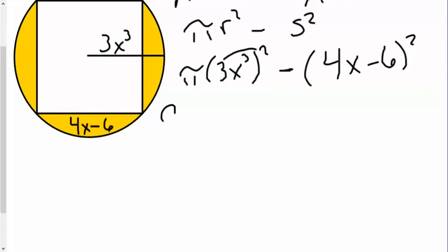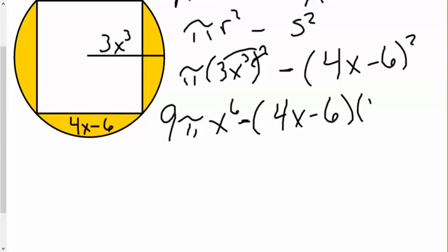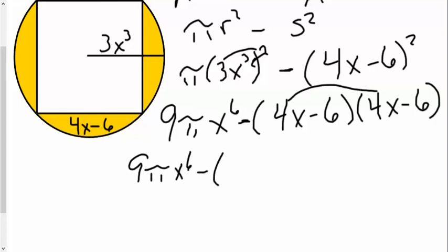3 squared gives me 9, so I have 9 pi, and x cubed squared gives me x to the 6. From there I need to expand 4x minus 6 to make it (4x − 6)(4x − 6), and then it's just simple double distribution. So I have 9 pi x to the 6 minus the quantity — 4x times 4x is 16x squared, and 4x times negative 6 gives me negative 24x.